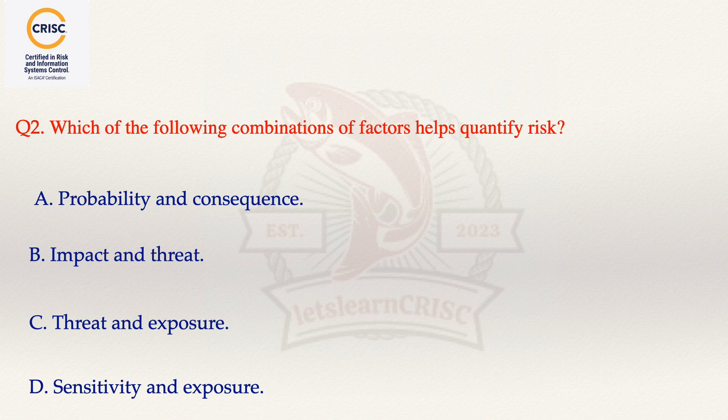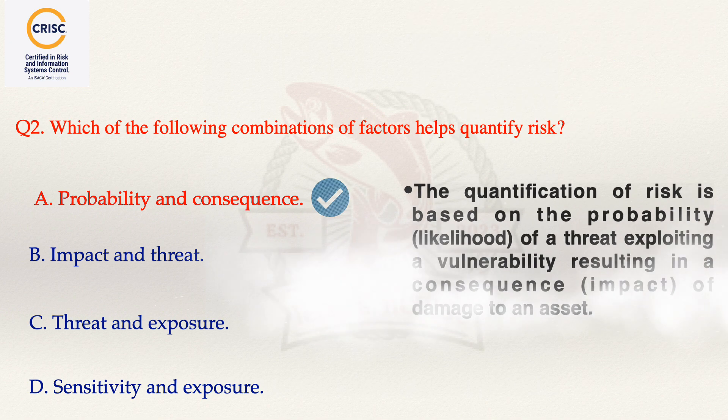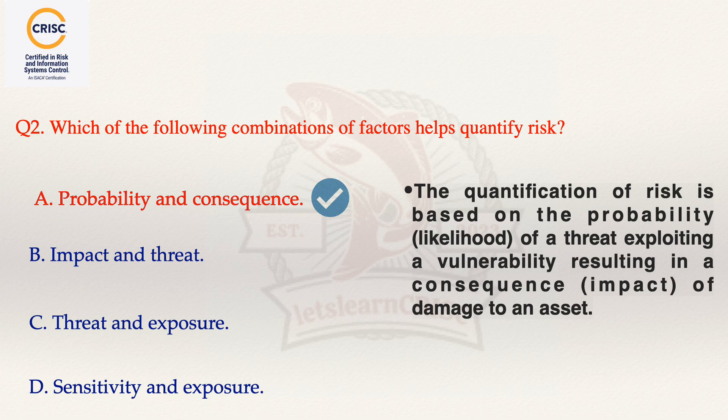The correct answer is option A, that is probability and consequences, because the quantification of risk is based on the probability — that is, the likelihood of a threat exploiting a vulnerability — resulting in consequences, that is the impact of damage to an asset.